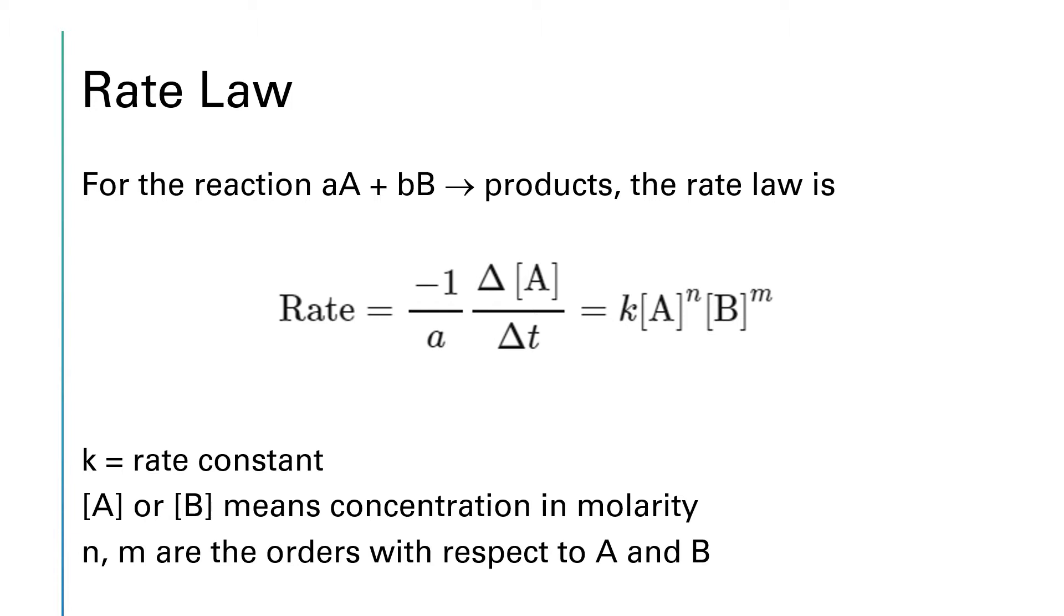We can write an expression known as the rate law this way. The rate is equal to minus 1 over a times the change in the concentration of A over time. We could also say that's minus 1 over little b times the change in the concentration of B over time. But what we're mostly interested in is this stuff all the way over on the right hand side.